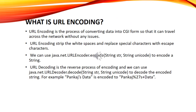What is URL encoding? URL encoding is the process of converting data into CGI form so that it can travel across the network without any issues. URL encoding strips white spaces and replaces special characters with escape characters. We can use java.net.URLEncoder.encode(String str, String unicode) to encode a string. URL decoding is the reverse process, and we can use java.net.URLDecoder.decode(String str, String unicode) to decode the encoded string. For example, "pankaj's data" is encoded to "pankaj+%27s+data".